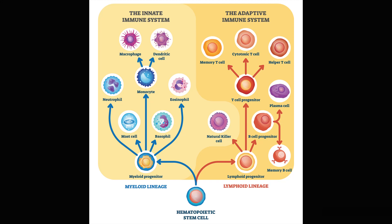Inflammation happens first, then we get the immune response. The immune response, hopefully, is going to be more targeted. Inflammation is general and happens very quickly. The immune response is a little bit slower, but it's more specific — it's going to be looking at one bacterium, virus, etc., that it's specifically trying to target.